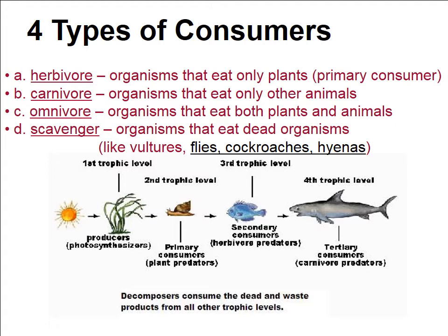We divide the consumers into four types: herbivores, carnivores, omnivores, and scavengers. Herbivores eat only plants — they're also called primary consumers. Carnivores are organisms that eat only other animals — they only eat meat. Omnivores eat both plants and animals — we fall under omnivores. Scavengers are organisms that eat dead organisms — your vultures, flies, cockroaches, hyenas. They only eat dead things, mostly because they don't like to bother hunting for things that are more difficult to catch.